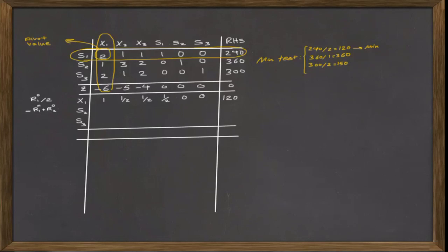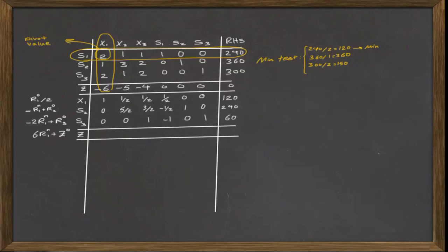Again, if you have forgotten what type 2 of elementary row operations is, please refer to the elementary row operations lesson. By implementing this operation, we get the second row of the simplex table. To change the third element of the pivot column to 0, we define another ERO that is negative 2R1 in the new table plus R3 in the old table. By doing this operation, we get the third row of the simplex table. For changing negative 6 to 0, the elementary row operation will be 6 multiplied by the first row of the new table, which is the pivot row, plus the row of Z in the previous table. By doing this, we get the new row of Z.